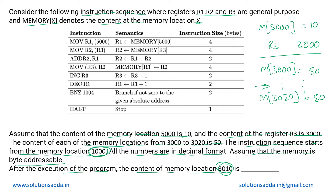After execution of the instruction set we need to determine what the updated value at memory location 3010 will be. The instruction set also provides the semantic meaning of each instruction and the size in bytes, though the size is not particularly relevant here. Let us look at what each instruction is doing.